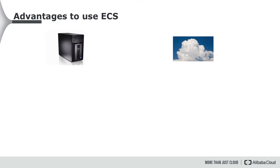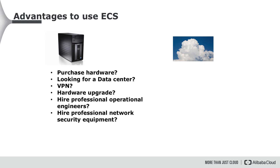Let's compare the physical server with an ECS instance. When you use a physical server, you need to first purchase the hardware and then find a data center for it. If a VPN is needed, you also need to buy VPN service. You also need to pay for hardware upgrades to meet new business requirements after a period of use. To operate and manage the physical server, you need to hire professional operational engineers. These tasks require a lot of time and money.